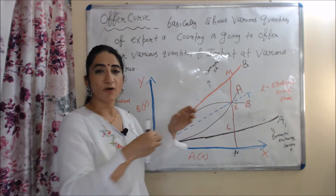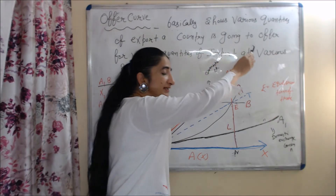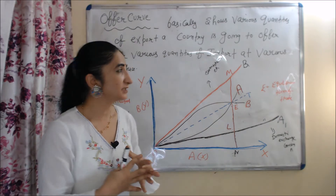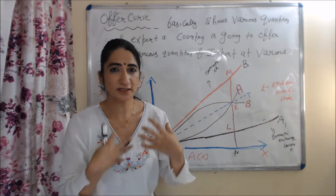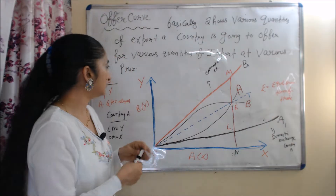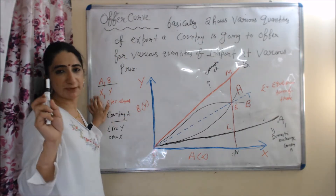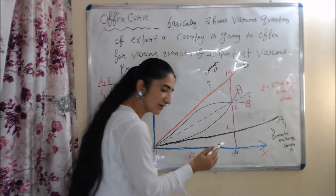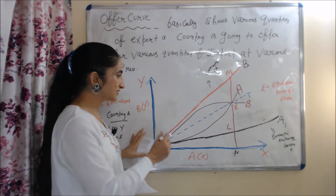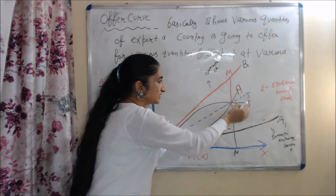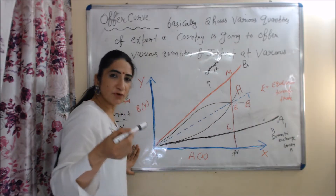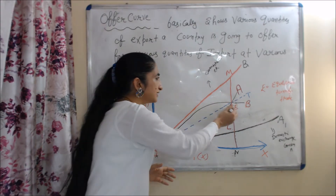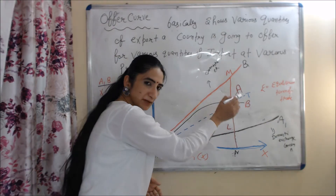Now we understand the graphical representation of this theory with the help of the offer curve. The offer curve basically shows various quantities of exports that a country is going to offer for various quantities of imports at various prices. We assume two countries A and B producing two goods X and Y. On the X axis we have good X, and on the Y axis we have good Y. OA is the offer curve of country A, OB is the offer curve of country B, and OT is the terms of trade line. Where both offer curves intersect at point E is the equilibrium terms of trade.